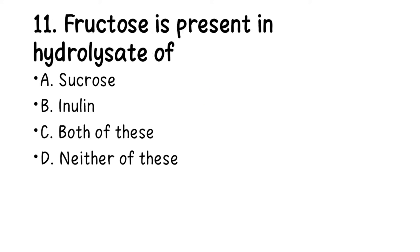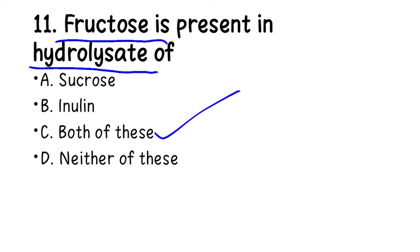Number 11. Fructose is present in the hydrolysate of: A. Sucrose, B. Inulin, C. Both of these, D. Neither of these. Be careful — these options are quite tricky. Remember the two key terms here: fructose and hydrolysis. The right answer is C, both of them. Both sucrose and inulin yield fructose on hydrolysis.